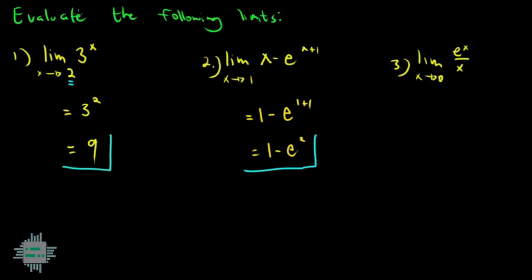For example 3 naman, may Euler's constant ulit. Meron ulit letter E. Pero may exponent siyang X. May denominator pang X. At namin daw ang limit ng function na yan as X approaches 0. So, let's try plugging in 0 for X. We have E raised to 0 over 0. Yung E raised to 0 na yan, ang nagiging value niyan since any number raised to 0 is 1. So, lagyan na natin yung 1. Pero yung denominator natin, 0 talaga yun. And we know that anything divided by 0 is undefined.